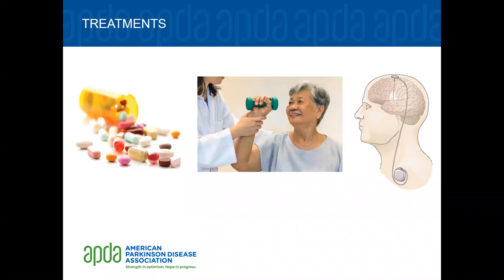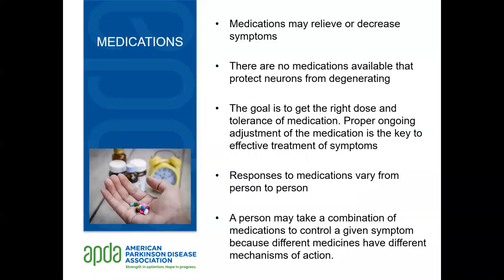The most widely recommended treatments for PD are medications, physical, occupational, and speech therapy, and deep brain stimulation. Available treatments help to control the symptoms of PD — a therapy that protects neurons from degeneration is not yet available. The goal of medication management is to get the right dose without too many side effects. Regular adjustment of dose and timing are key to effective treatment. Because each person processes medications differently, responses may vary. PD may best be treated with a combination of medications, as each has a different effect on the brain.